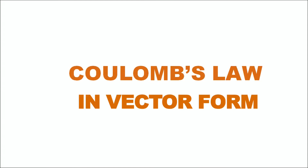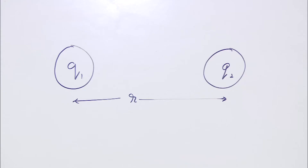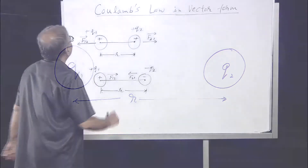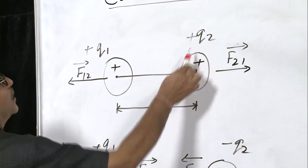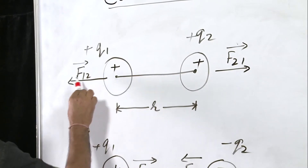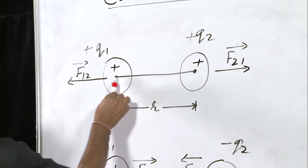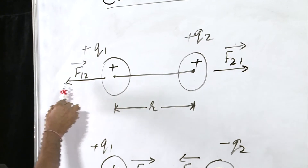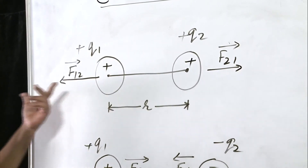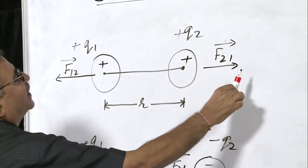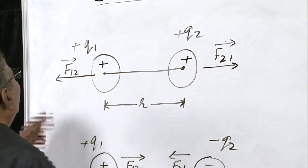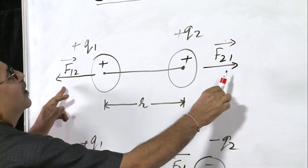Now we will explain Coulomb's law in the vector form. Let there be two point charges q1 and q2 separated by a distance r. Let us look at the figure and see how the forces act on these two charges. This is charge +q1 and this is charge +q2. The force on charge one due to charge two will be from right to left, and the force on charge q2 will be from left to right. So f12 and f21 are in opposite directions.